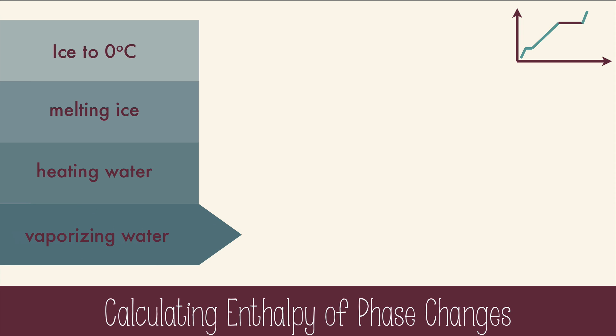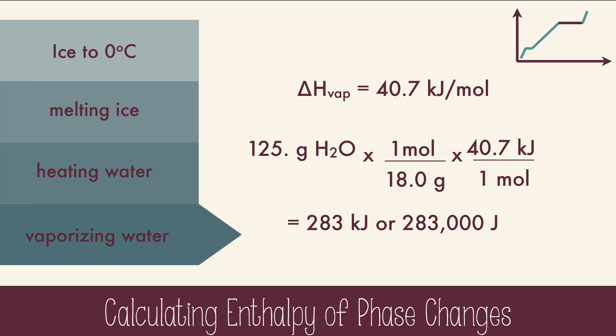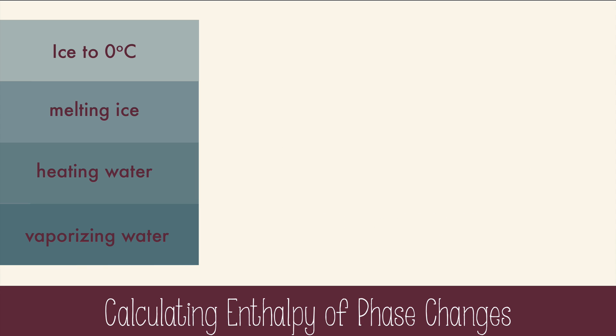Finally, we calculate the heat of vaporizing the water with the enthalpy of vaporization and dimensional analysis. Start with 125 grams, we'll multiply by the molar mass of water, and the enthalpy of vaporization, and we get 283 kilojoules, or 283,000 joules. Lastly, you add the values from each step, and you get 380,000 joules, or 380 kilojoules.